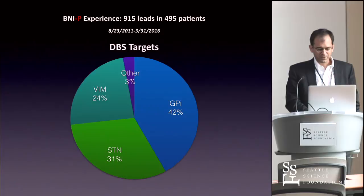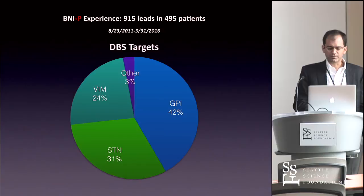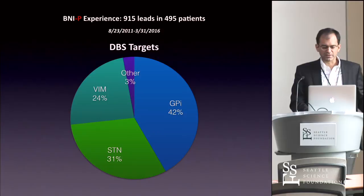There are nuanced issues between the various targets: VIM, which we use for tremor; globus pallidus and STN, which are the two Parkinson's targets; and other targets including the fornix for Alzheimer's disease.